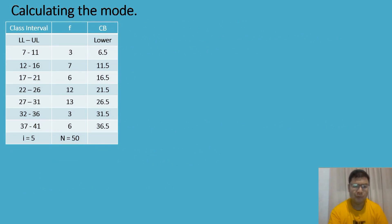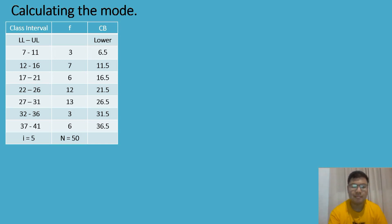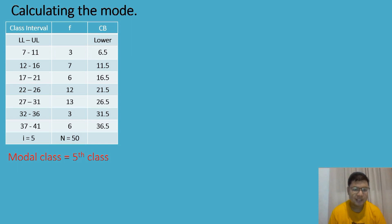Let us now construct our frequency distribution table. In calculating the mode, we need the class interval, the class width equal to 5, the frequency, the total number of frequency equal to 50, and the lower class boundary. The next step is to determine the modal class — the one with the highest frequency. In this case, the highest frequency is 13, so our modal class will be the fifth class.